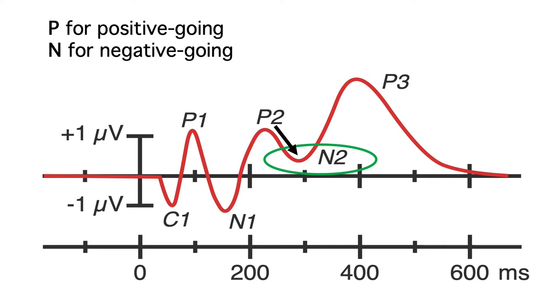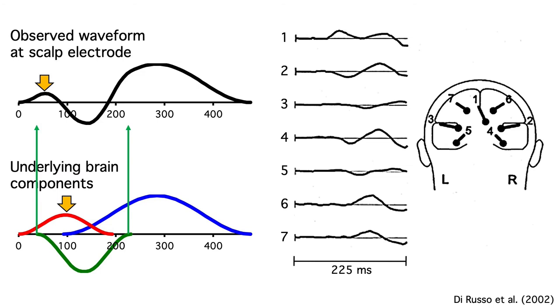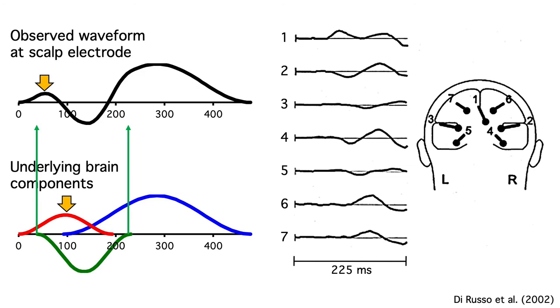This naming convention might seem straightforward, but it can get pretty complicated and confusing. As I mentioned before, the relationship between the timing of the underlying component and the timing of the observed peak can be pretty complicated. And there are way more underlying components than visible peaks. In fact, a given component might not have a single distinct peak.